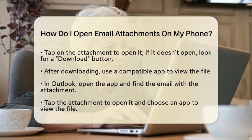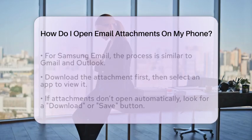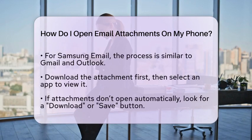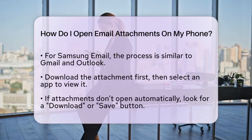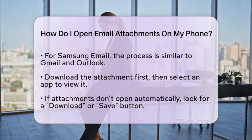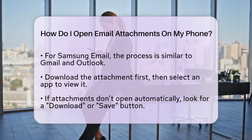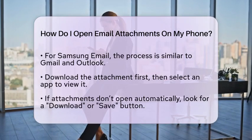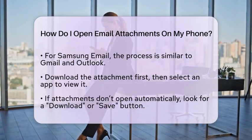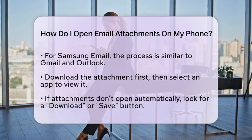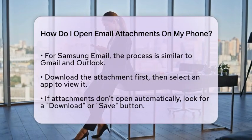Now, if you are using the Samsung email app, the steps are similar. Open the app and find the email with the attachment. Tap on the attachment to download it, and then select an app to view it.